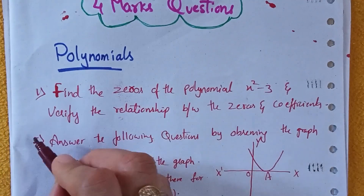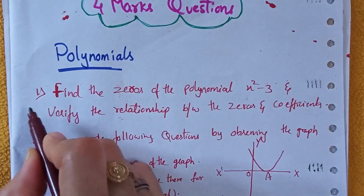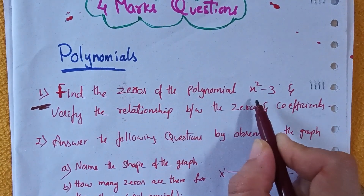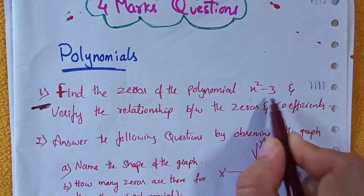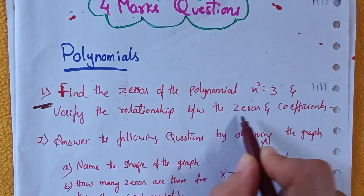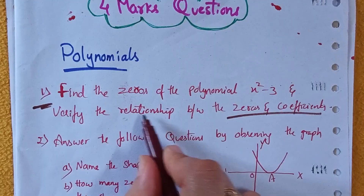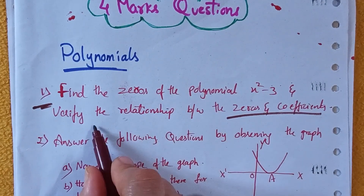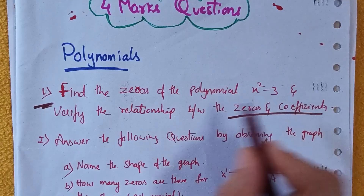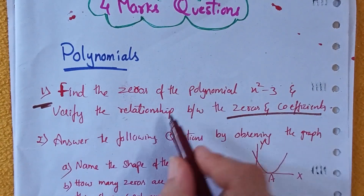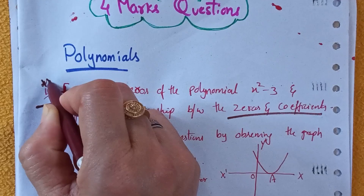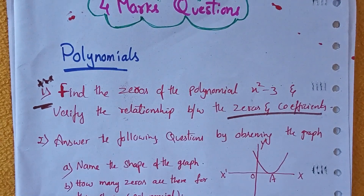From Polynomials, the first most important question is: find the zeros of the polynomial x² − 3 and verify the relationship between the zeros and the coefficients. This is a very very important question.